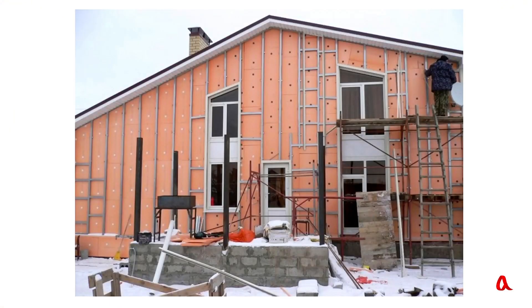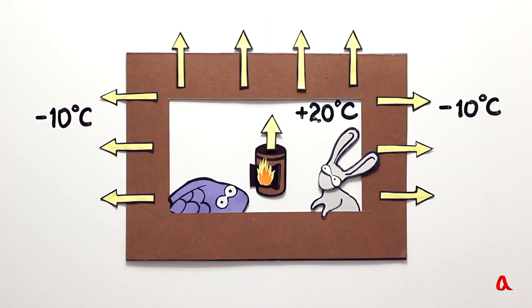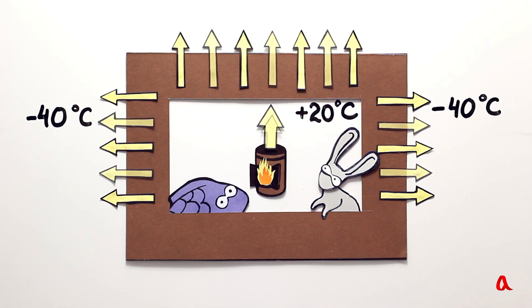But instead of making the wall thicker, it's better to insulate it with panoplex or mineral wool. Finally, thermal flow intensity depends on outdoor and indoor temperature difference. If this difference increases twofold, energy expenditure will have to be raised twofold as well.